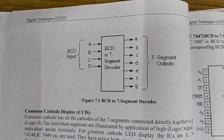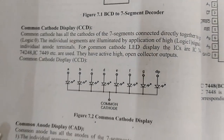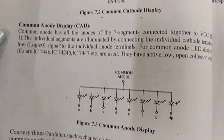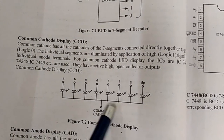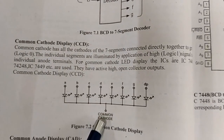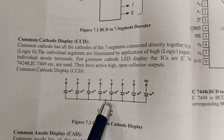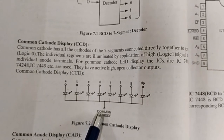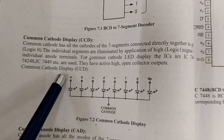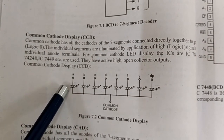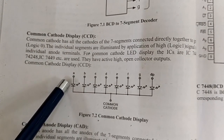As far as 7-segment displays are concerned, they are of two types: common cathode and common anode. In a common cathode display, the cathodes of individual LEDs are shorted together and one common terminal is brought outside, which is normally connected to ground. If the anode is supplied with logic 1, the corresponding LED will glow; if supplied with 0, the LED will be turned off.